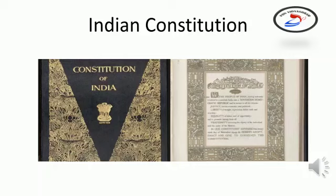India is the world's largest democracy and is divided into 28 states and 8 union territories. A democracy is a system of government in which all the people of a country can vote to elect their representatives. India became a free, democratic and independent country when it gained freedom from the British on 15th August 1947.